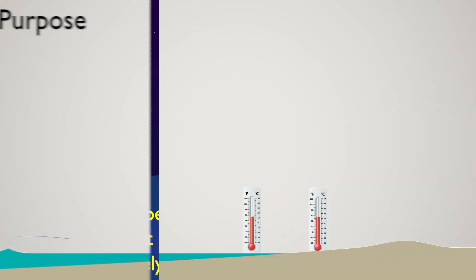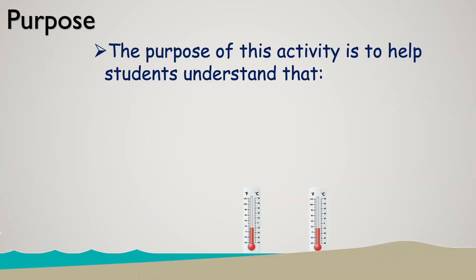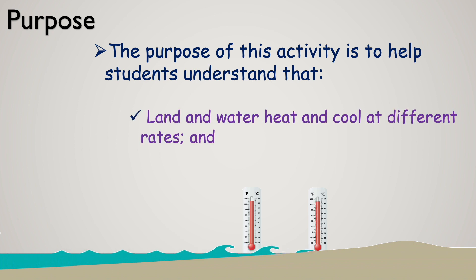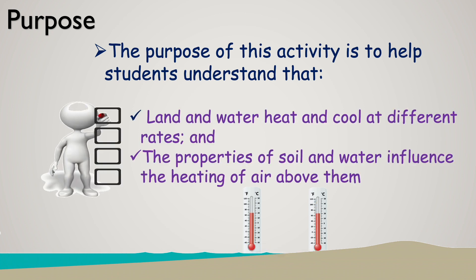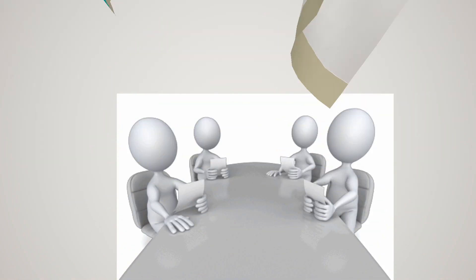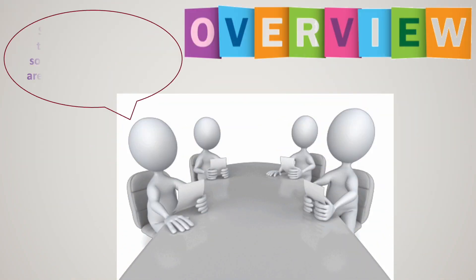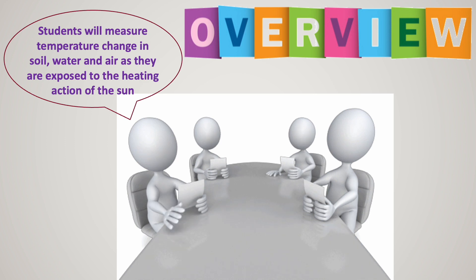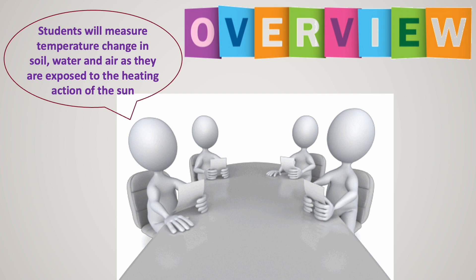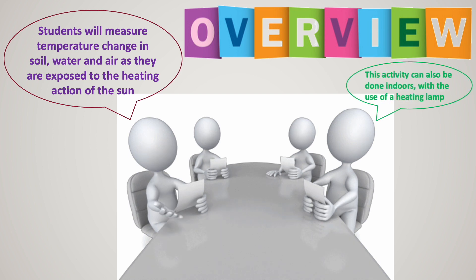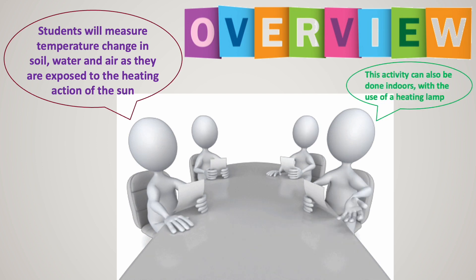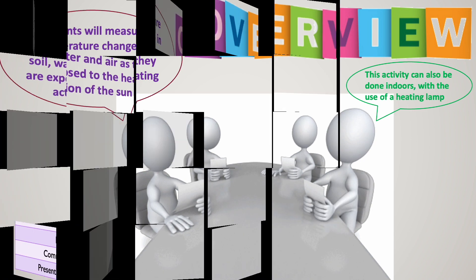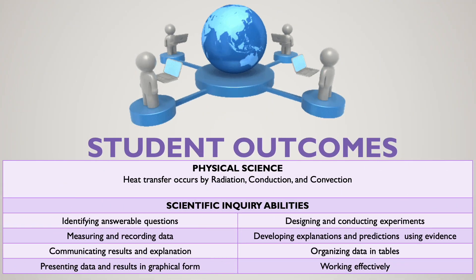The purpose of this activity is to help students understand that land and water heat and cool at different rates, and that the properties of soil and water influence the heating of air above them. Students will measure temperature change in soil, water, and air as they are exposed to the heating action of the Sun. This activity can also be done indoors with the use of a heating lamp.